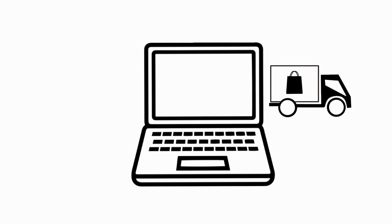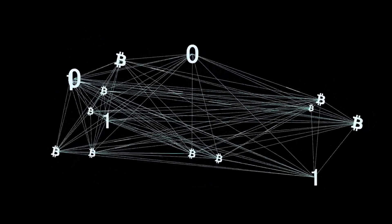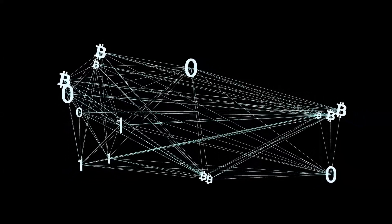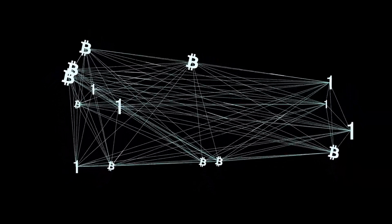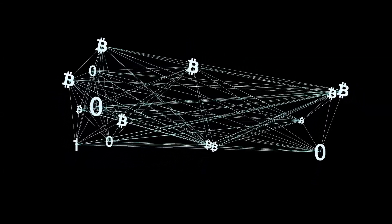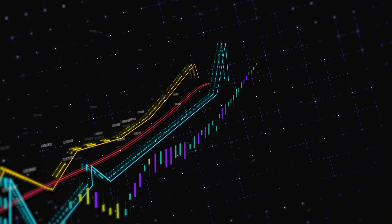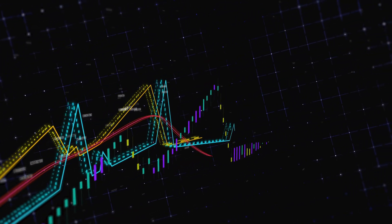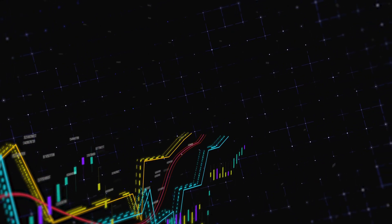Chain Core also allows transactions to be signed and processed in a matter of milliseconds. Another feature is Sequence — a tool offered through the Chain network that can be used to track balances and transfer tokens through a multitude of inner and outside networks. XCN has many notable investors and partners such as Citibank, Capital One, and Visa, to name a few.